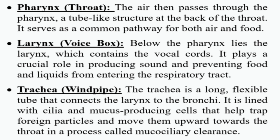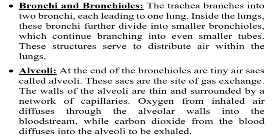Trachea (Windpipe): The trachea is a long, flexible tube that connects the larynx to the bronchi. It is lined with cilia and mucous-producing cells that help trap foreign particles and move them upward towards the throat in a process called mucociliary clearance. Bronchi and bronchioles: The trachea branches into two bronchi, each leading to one lung. Inside the lungs, these bronchi further divide into smaller bronchioles, which continue branching into even smaller tubes. These structures serve to distribute air within the lungs.